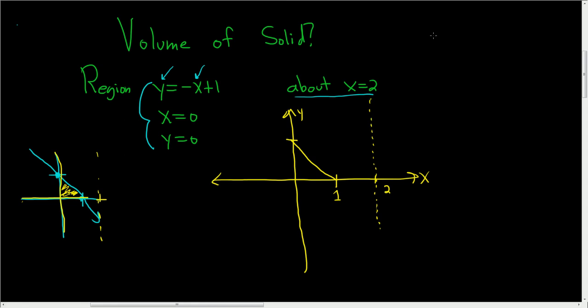OK, let's go ahead and use the shell method. So whenever you use the shell method, your rectangles are always parallel to the axis of revolution. So in this case, this is our axis of revolution because we're spinning it here. And when we draw our rectangle, there's only one way to draw it. It has to be parallel.